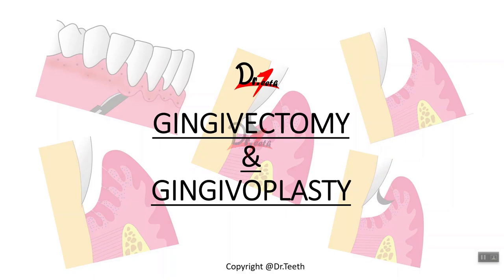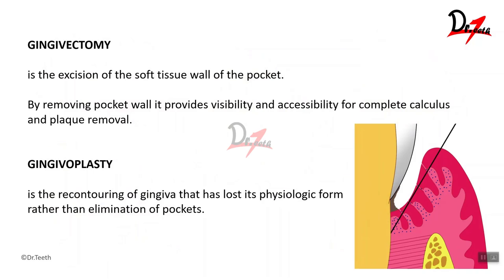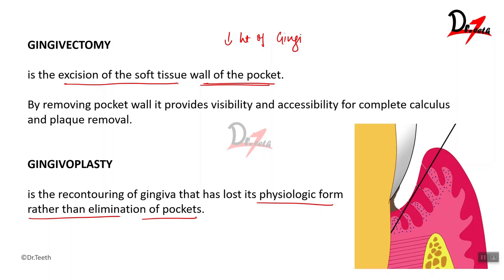Now coming to gingivectomy and gingivoplasty. Gingivectomy is the excision of the soft tissue wall of the periodontal pocket — it provides visibility and accessibility for complete calculus and plaque removal. Gingivoplasty, on the other hand, is the recontouring of the gingiva that has lost its physiological form, rather than elimination of the pocket. In gingivectomy, you eliminate the pocket and decrease the height of the gingiva, whereas in gingivoplasty you do not excise the gingiva — you only recontour it to bring it back to its physiologic form.